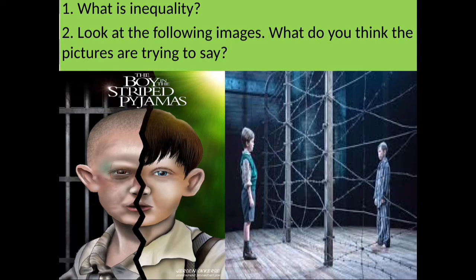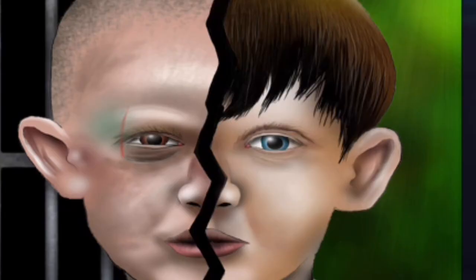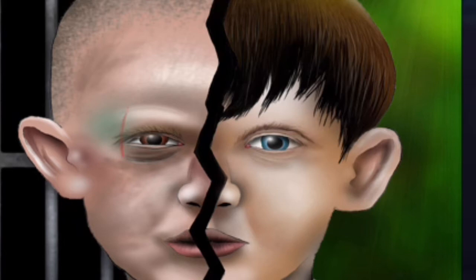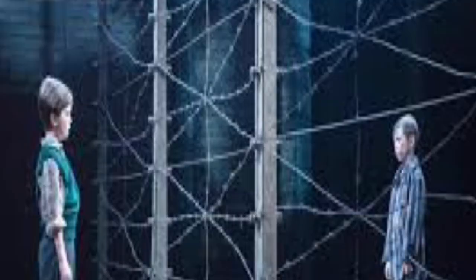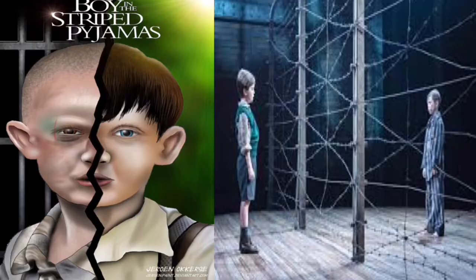We have Shmuel on one side and Bruno on the other. You can see how Shmuel's hair is shaven — he looks unkempt, frail, and dirty — and then compare with Bruno, who is healthy, well-fed, and well-dressed. In the second picture, they are divided by the barbed wire of the concentration camp. These are disturbing images that really highlight the idea of inequality.